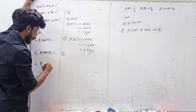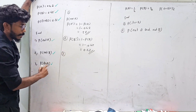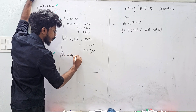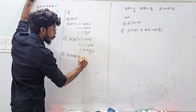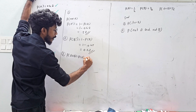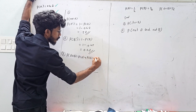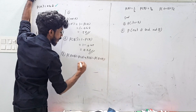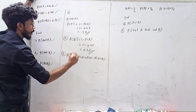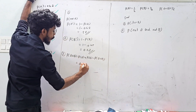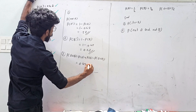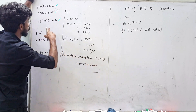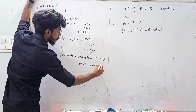Third question: probability of A union B. Using the formula: P(A) plus P(B) minus P(A intersection B) equals 0.42 plus 0.48 minus 0.16.